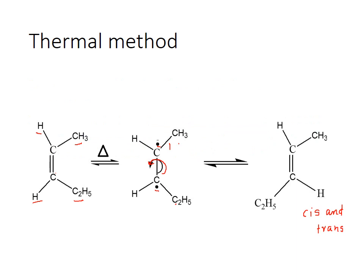When using the thermal method, you apply heat to the system. Here you can see a cis isomer where the methyl group is on the same side as the ethyl group, and the hydrogens are both on the same side. Upon heating, the pi bond will break — the presence of the pi bond itself is the restriction in rotation. When this restriction is removed, free radicals are generated at each doubly bonded carbon, and the carbon-carbon single bond can undergo free rotation, changing the relative positions of the methyl and ethyl groups.